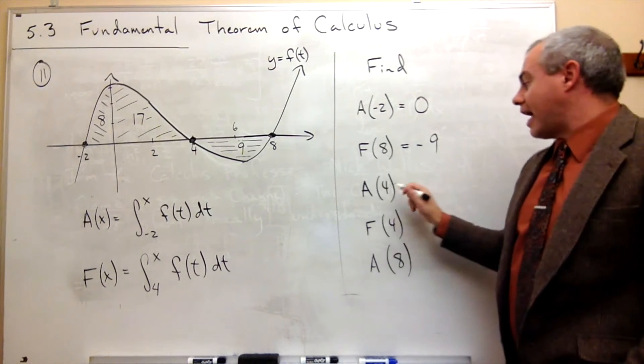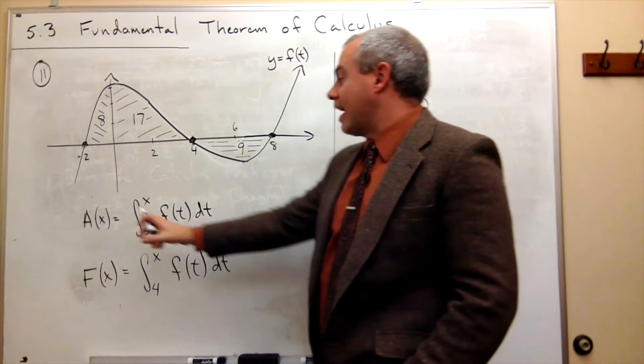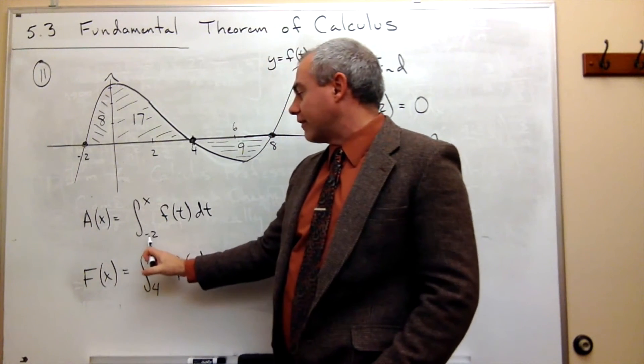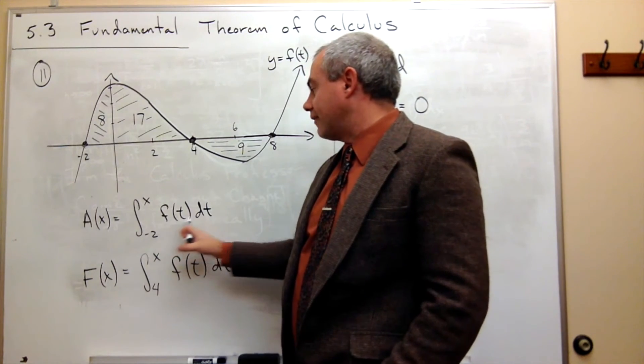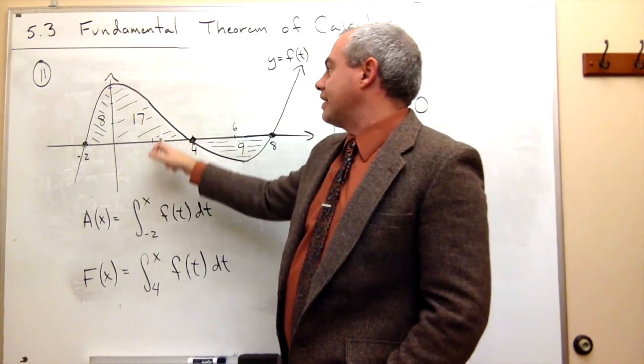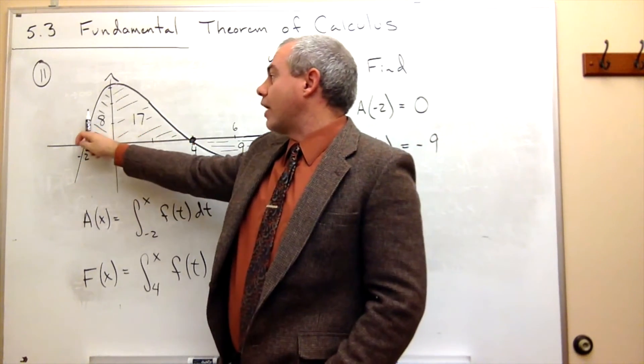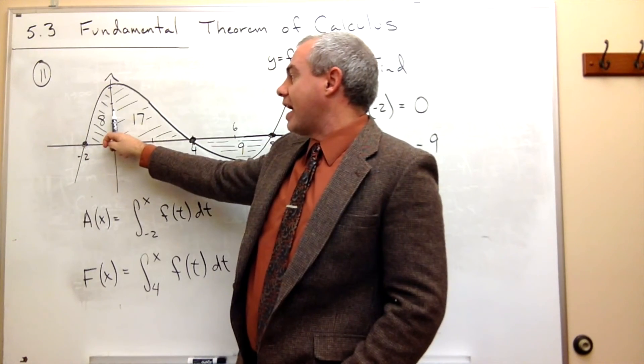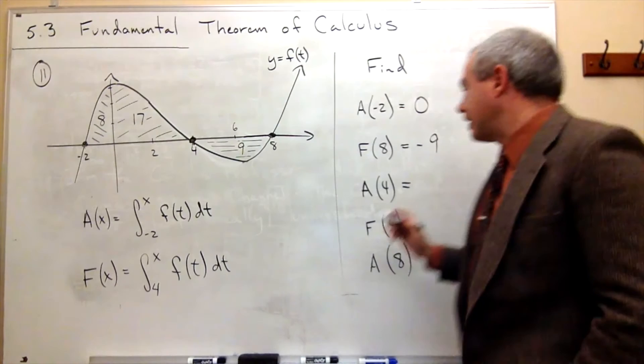What about A of 4? A of 4, now we're back on this function. I'm integrating from negative 2 to 4 of this little f of t dt. So I'm taking area from negative 2 until I get to 4. All of this is positive area. So I add up this positive area, 8, and this positive area, 17, and I get 25.